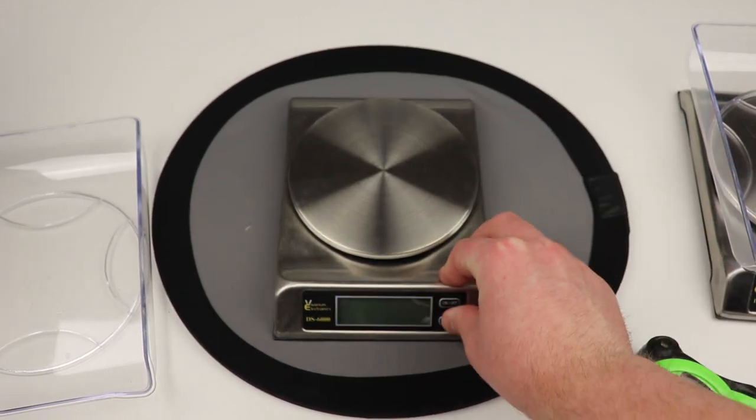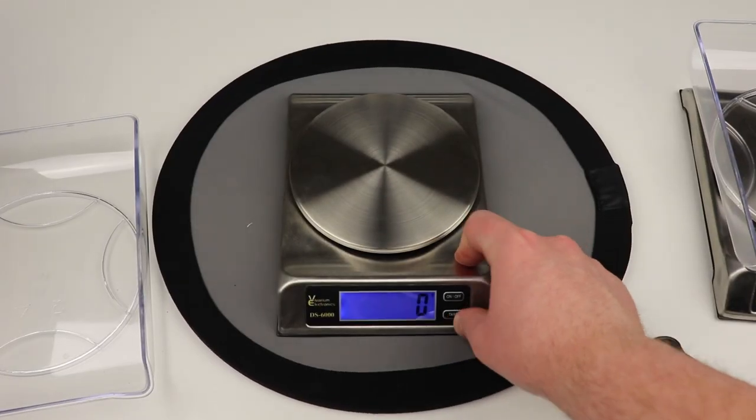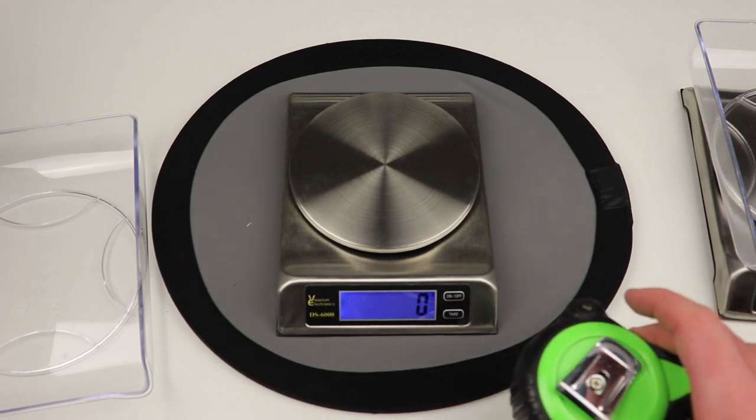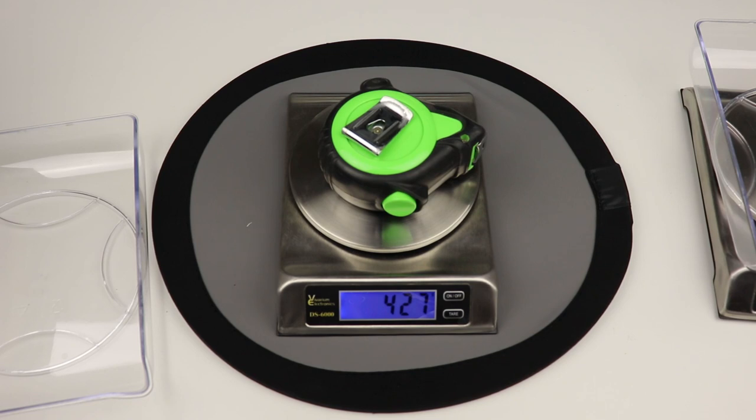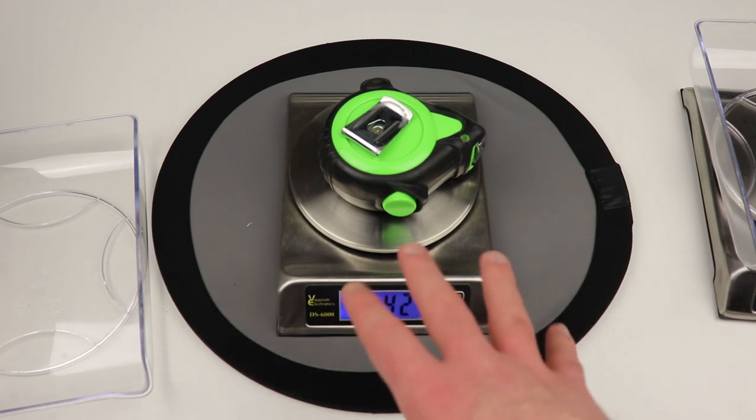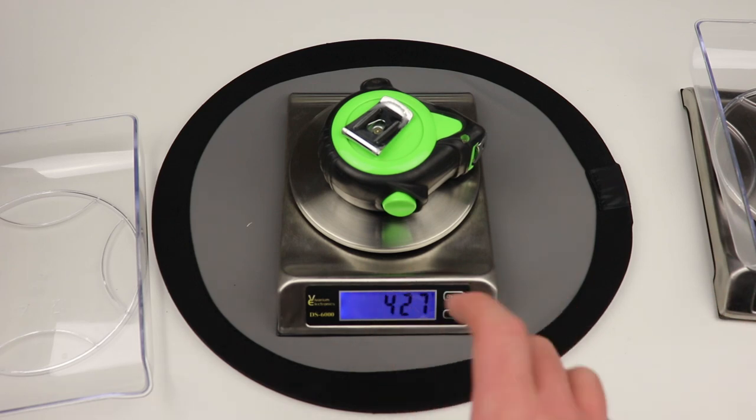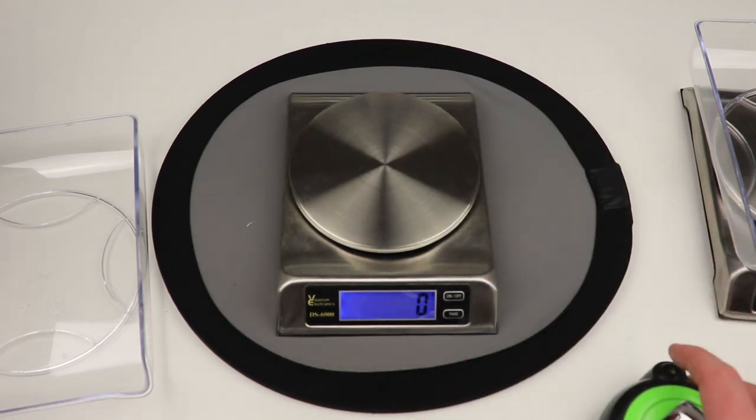We'll do this once or twice more just to show you guys how accurate and consistent the scale actually is. So we turn it back on, tare it, make sure the thing stays at zero, put that back on and again 427 grams. Normally some of these scales can be off by a gram or two, but this one is literally sitting right on point. It hasn't thrown a difference of one gram or even sometimes two grams at all in this test.